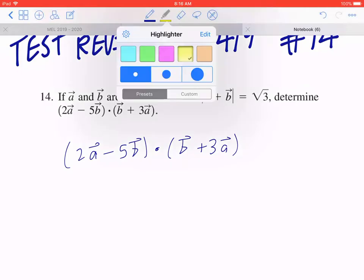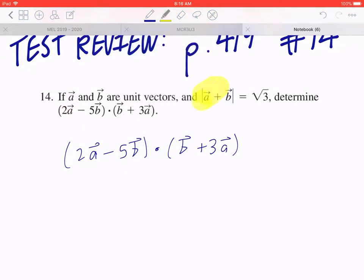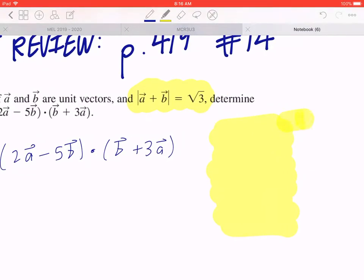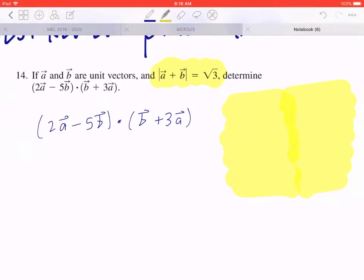And the second idea, which we'll come back to in a moment, is the fact that the magnitude of a plus b equals root 3. So when I come back to this in a moment, we'll draw a diagram, we'll find the missing angle, it's all going to work out.